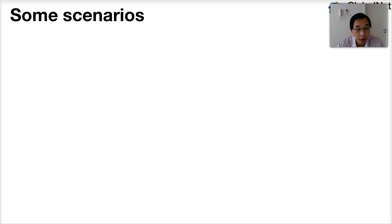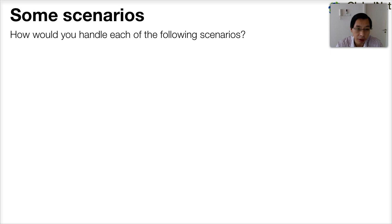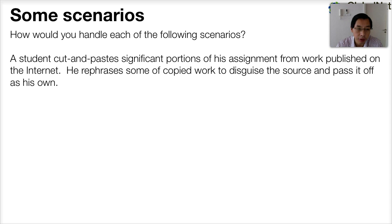Let's look at some different scenarios here and put yourself in the shoes of an educator and think about how you would handle each of these scenarios. Here's the first scenario. A student copied significant portions of his assignment from work that's already been published on the internet. He's rephrased some of the work he's copied to try and disguise it and has tried to pass off the work as his own. To me, in this case, this is a clear academic offence.